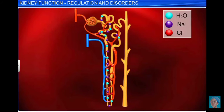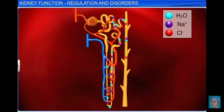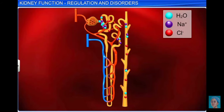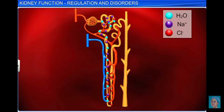Aldosterone increases the reabsorption of sodium and water from the distal parts of the renal tubule, resulting in an increase in blood volume, which increases blood pressure and GFR. This complex mechanism is commonly known as the renin-angiotensin mechanism.